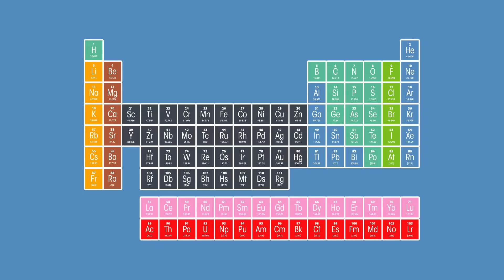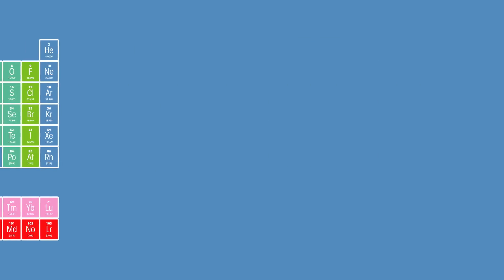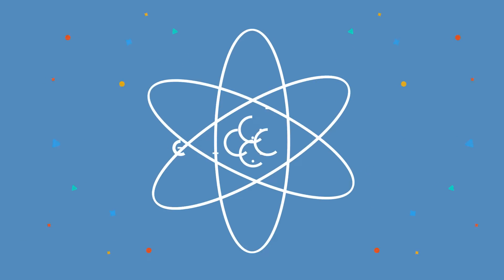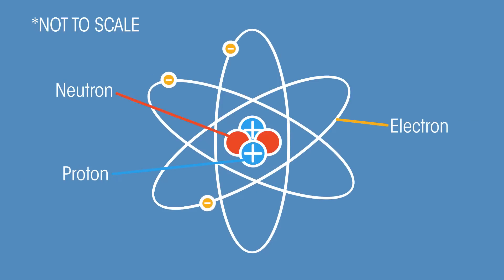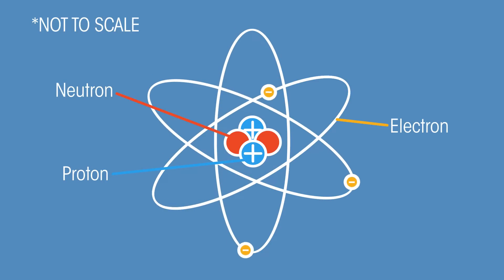The periodic table divides the world into just over 100 elements, sorted by their chemical properties. But did you know that each kind of atom is made up of a different combination of just three subatomic particles? Everything around you is made from just three ingredients.